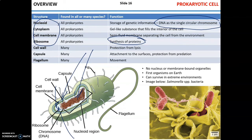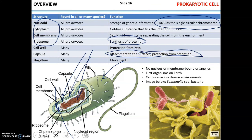Some prokaryotic cells have a cell wall, which protects them from lysis especially in hypotonic environments. Many bacterial cells also have a capsule, which increases pathogenicity, allows better adhesion to surfaces, and protects them from predation by the immune system. Many bacterial cells also have flagella, which, just as in eukaryotic cells, are necessary for movement.